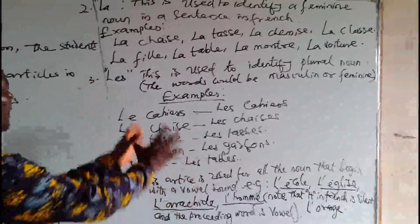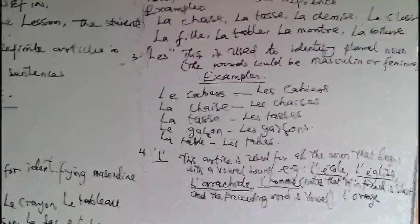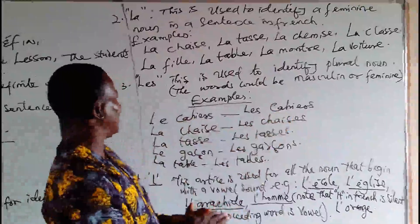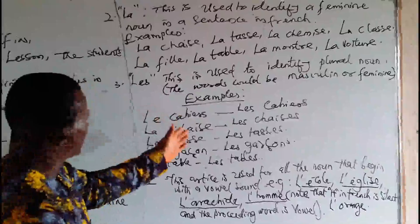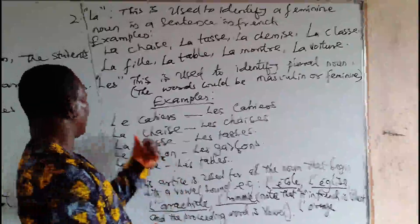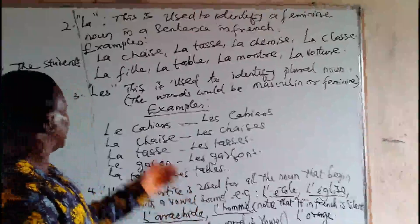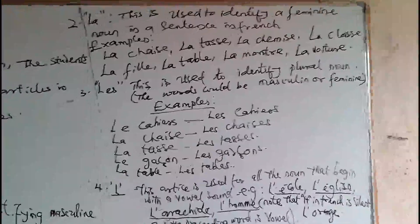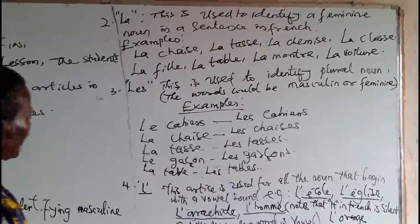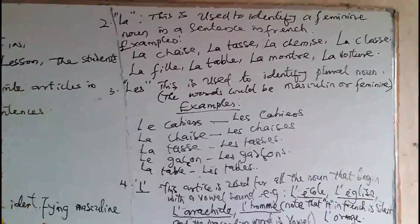Here are the plural examples: le cahier becomes les cahiers — the notebook, the notebooks; la chaise becomes les chaises — the chair, the chairs; la tasse becomes les tasses — the cup, the cups; le garçon becomes les garçons — the boy, the boys; la table becomes les tables — the table, the tables.